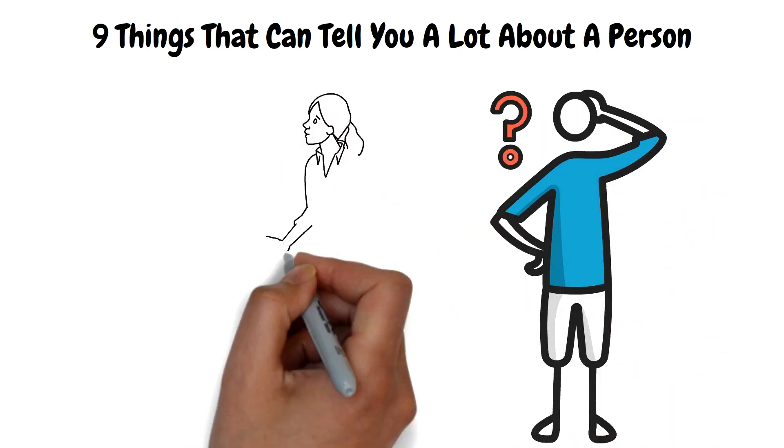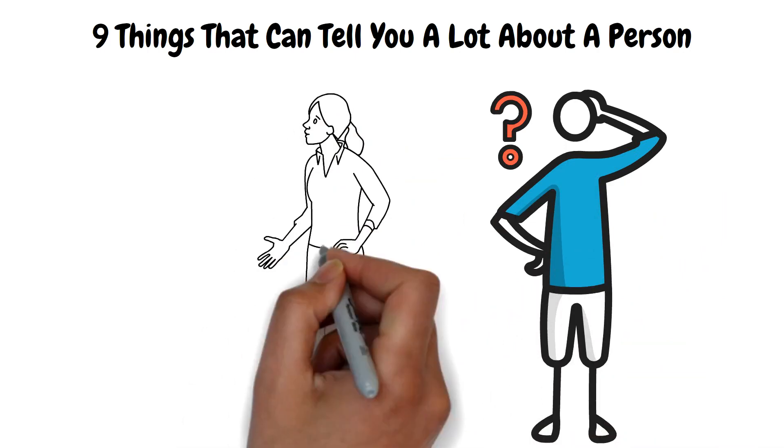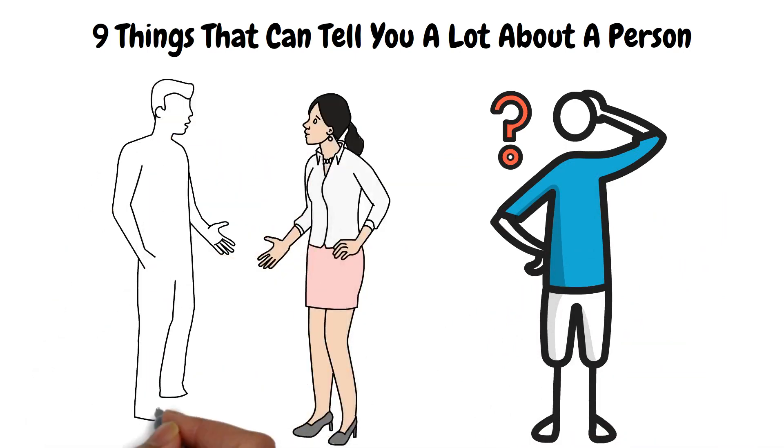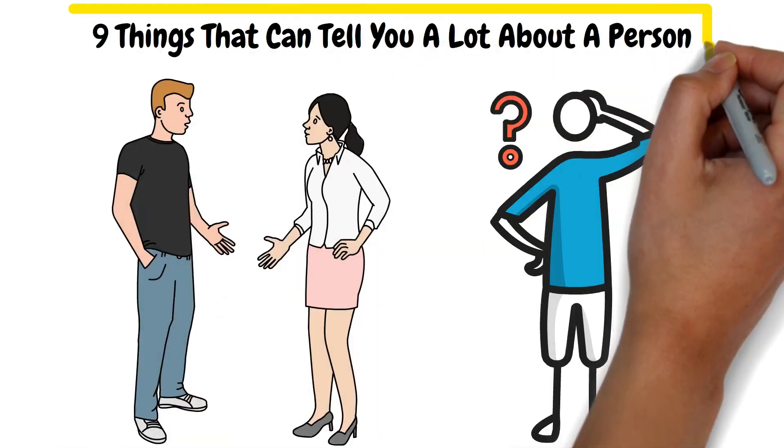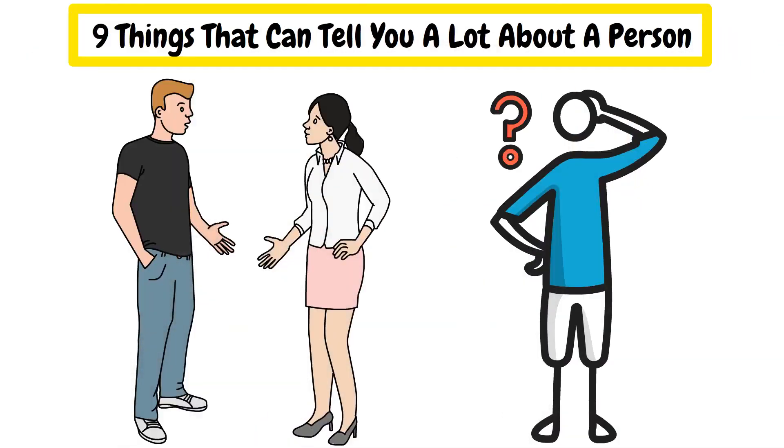However, other people constantly give themselves away by certain behaviors, choice of words, and other small things. You just need to know where to look and what to listen to. Here are some things that can reveal someone's true character to you.